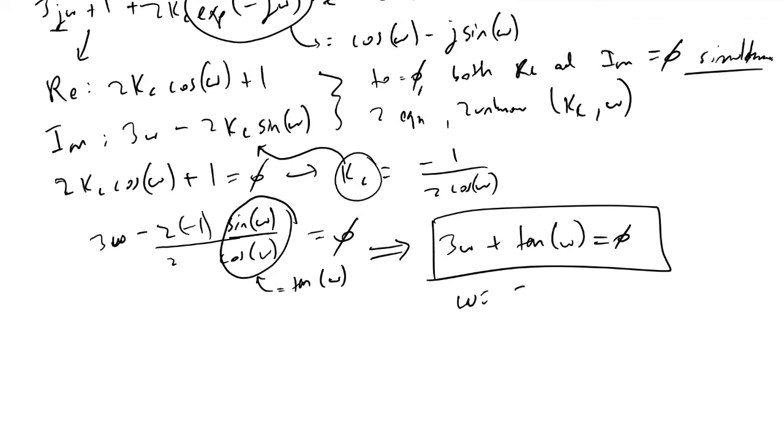This is radians. Because we know what our Kc is as a function of ω, we also have Kc, which in this case would be equal to 2.66.